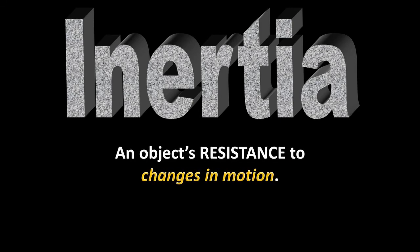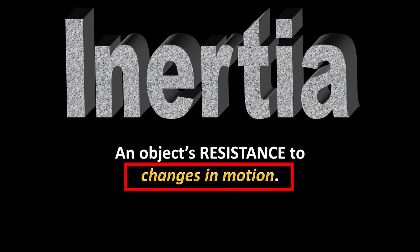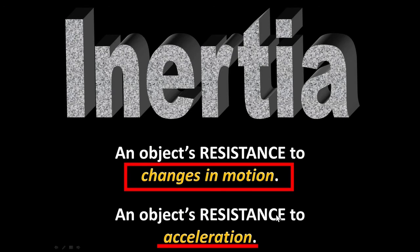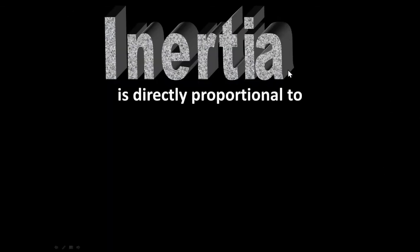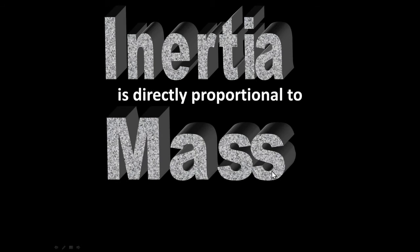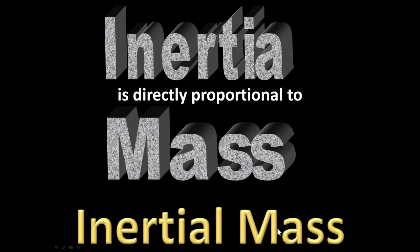Now we're ready to talk about inertia. Inertia is an object's resistance to changes in motion, and that phrase 'changes in motion' can be substituted with one word: acceleration. Inertia is a property of matter — that matter will resist accelerating. The amount of inertia an object has is directly proportional to how much mass it has. A four kilogram mass would have four times as much inertia as a one kilogram mass. This resistance to motion is a property of mass, and we often call that property inertial mass.